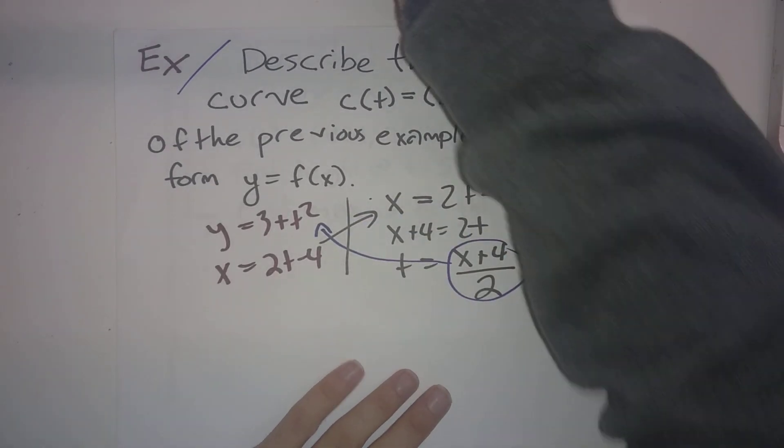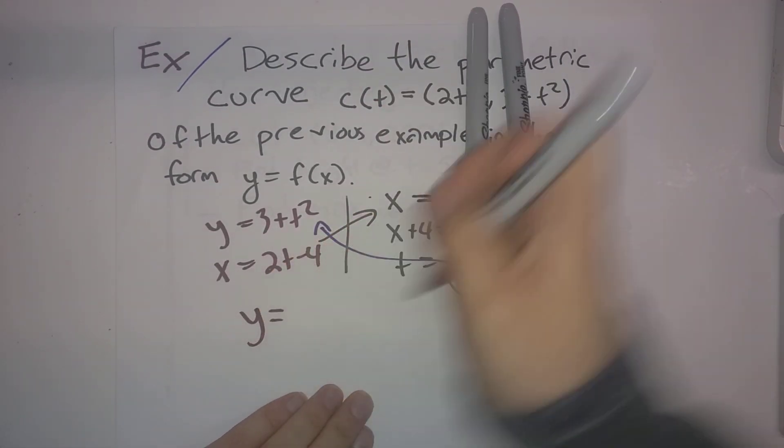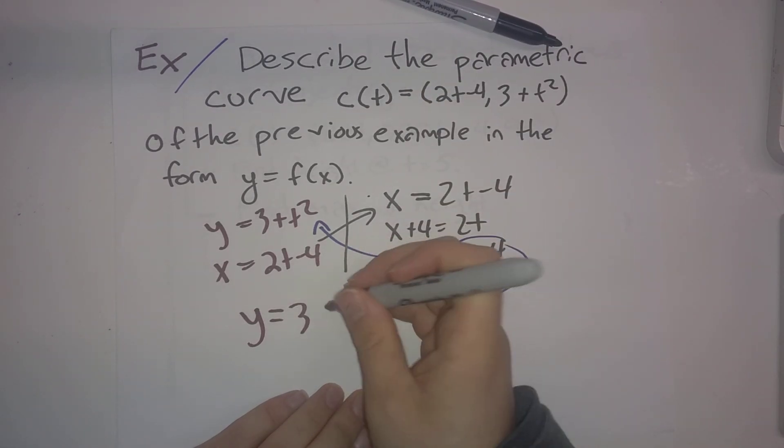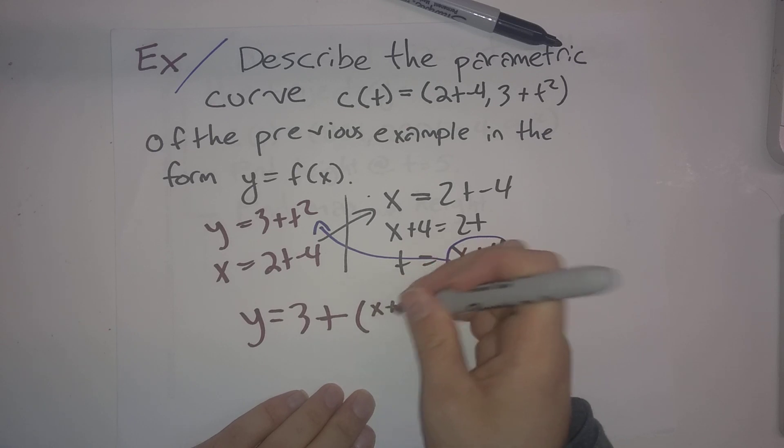And so now we're going to take that and substitute that in up here. So y = 3 + ((x+4)/2)².